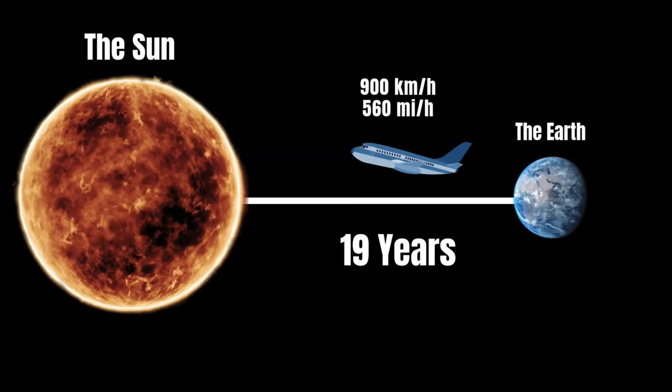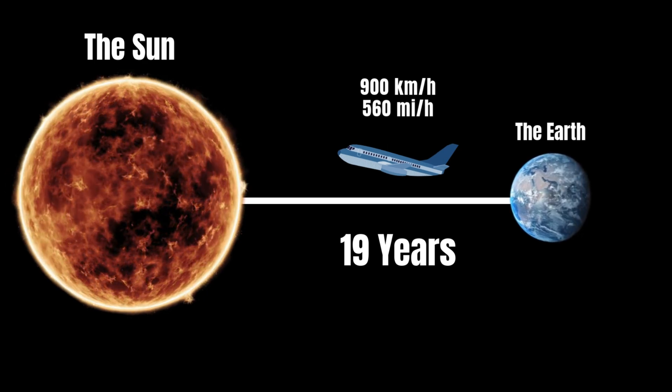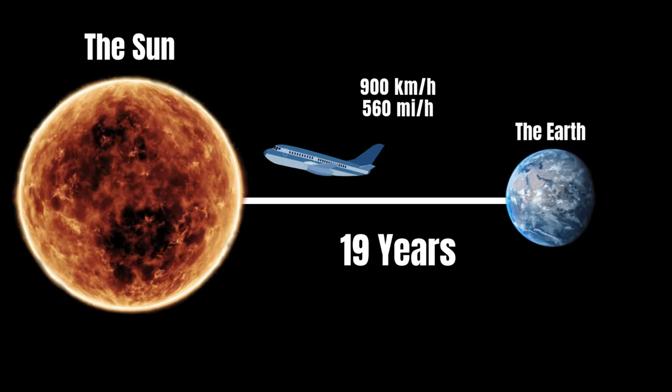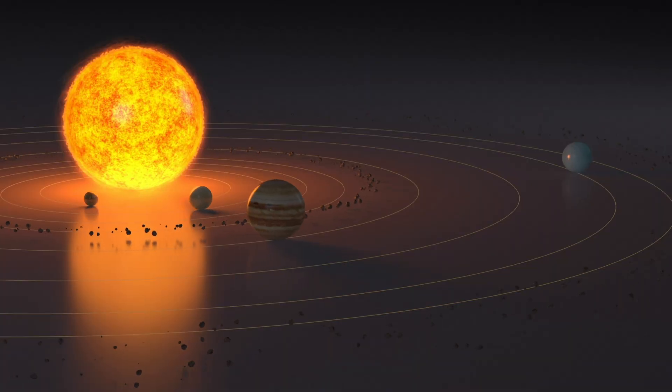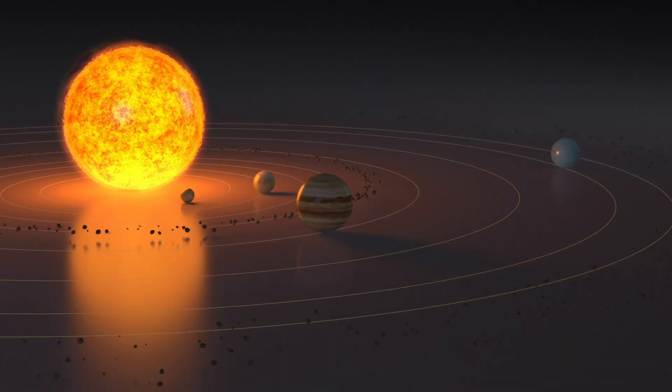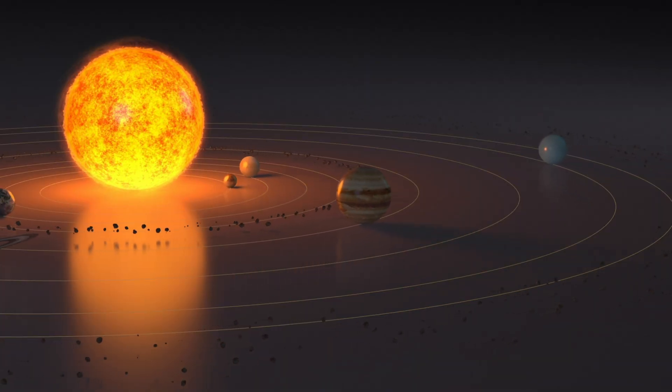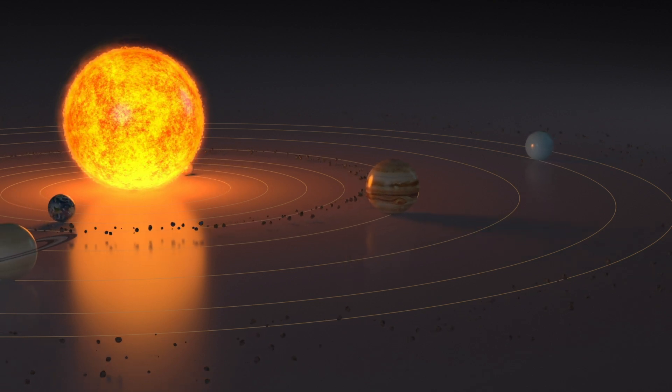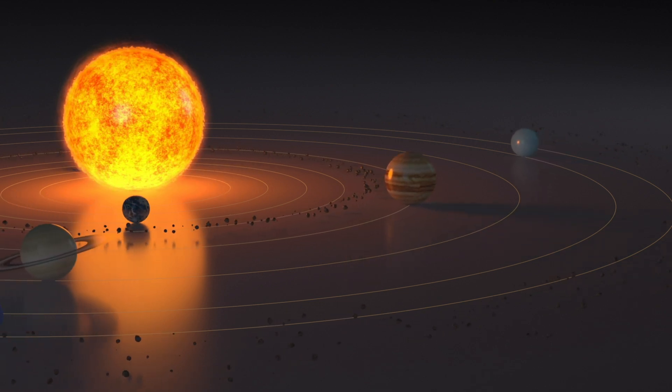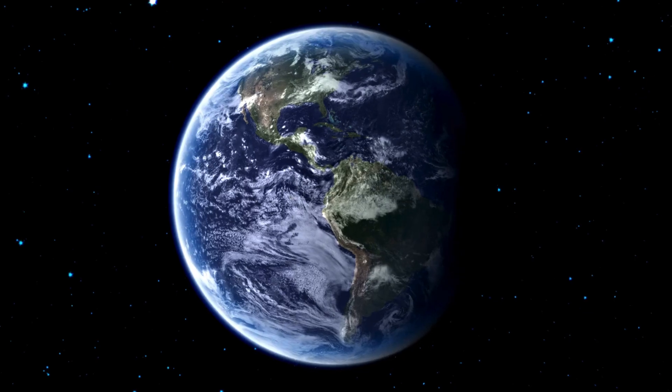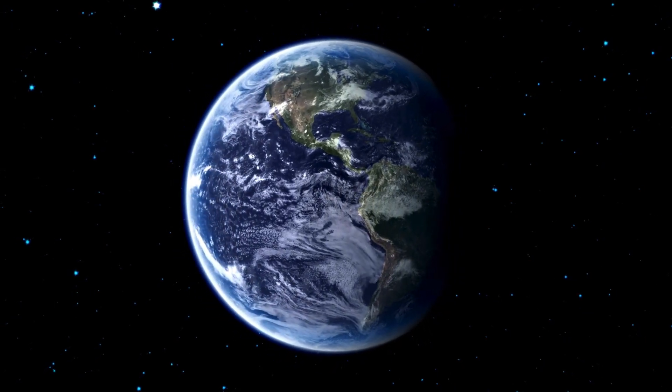A commercial jet, flying at 900 kilometers per hour, would need nearly 19 years to cover the same distance. And yet, even these staggering numbers only scratch the surface of our cosmic reality. The sheer vastness of space, even within our own solar system, is a reminder of how small we are in the grand design of the universe.